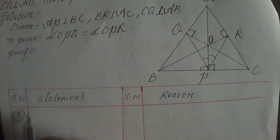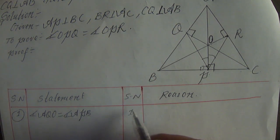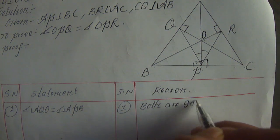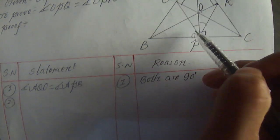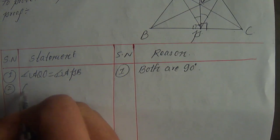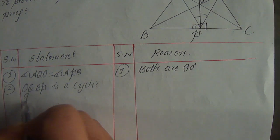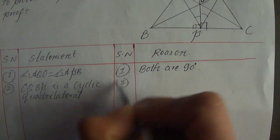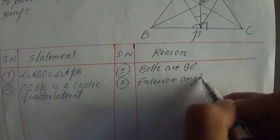Let's write statement number one: angle AQO is equal to angle APB. The reason — both are 90 degrees. Both are 90 degrees. Now in statement number two, these angles are equal. OQBP is a cyclic quadrilateral. OQBP is a cyclic quadrilateral.